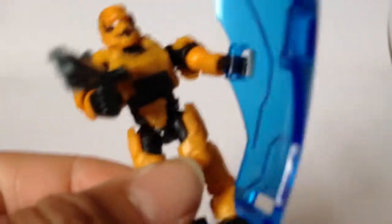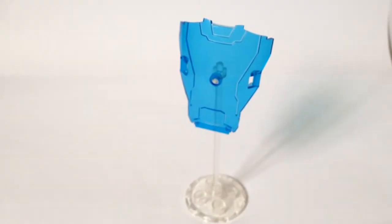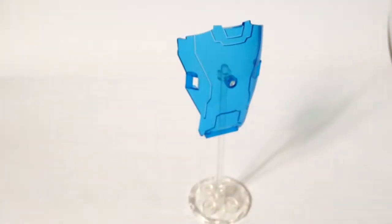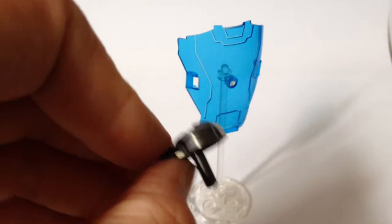Alright, now onto the special features of this set. The main special features of this set is the use of the stand and the hard light shield. The hard light shield can be attached like this on the stand. I guess if you had one of the little drones that also appear in the campaign. And also the new jetpack mold.